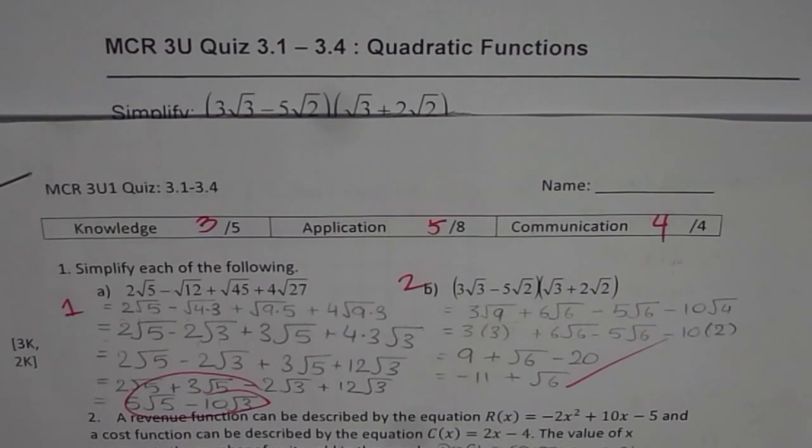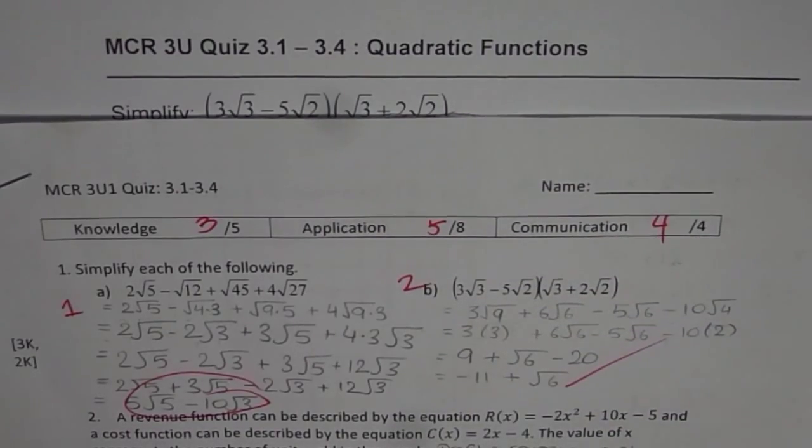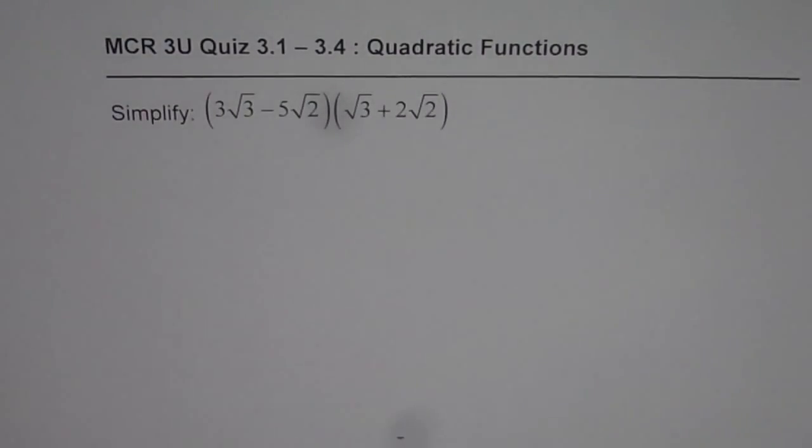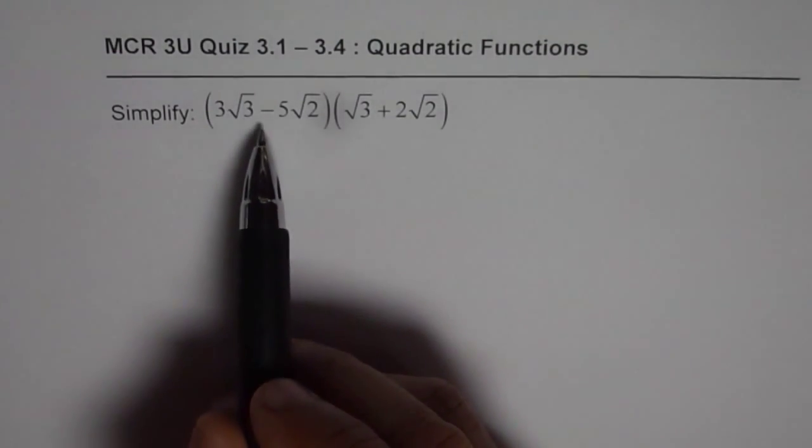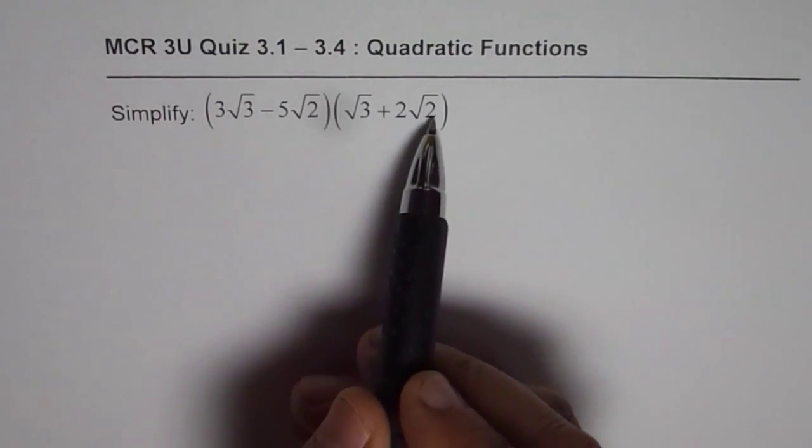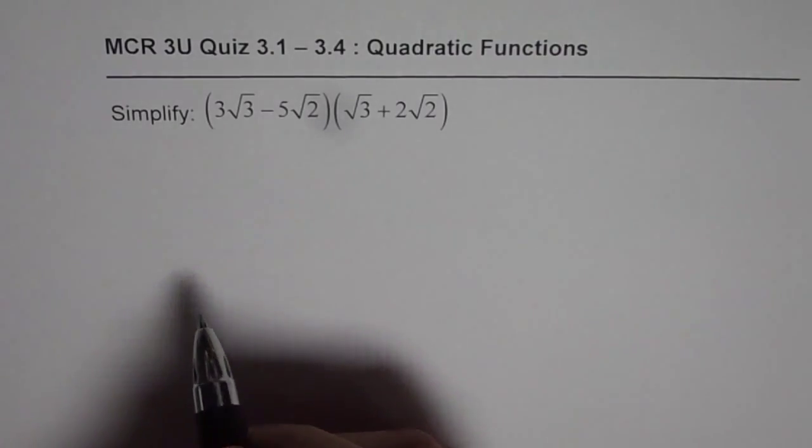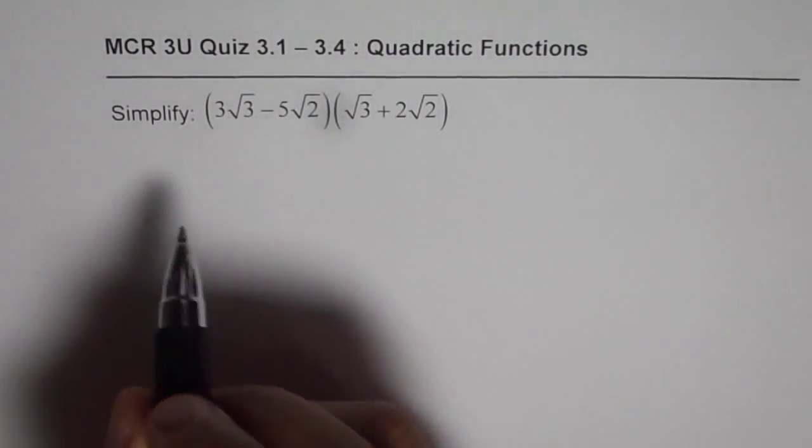Here is part B of question 1. We will see how to simplify radicals, and in this particular case, we will apply the distributive property and then simplify. We have 3 square root 3 minus 5 square root 2, times square root 3 plus 2 square root 2. We need to multiply and then simplify. Let us apply the distributive property.